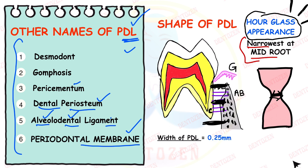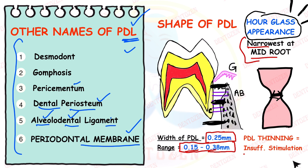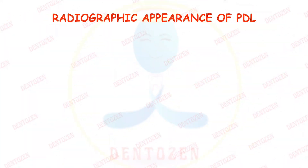The width of PDL is 0.25 millimeters, but usually in the range of 0.15 to 0.38 millimeters. The periodontal ligament can become thinner if insufficiently stimulated — meaning if we do not use teeth on one side for function, the PDL may become thinner and lose its function.